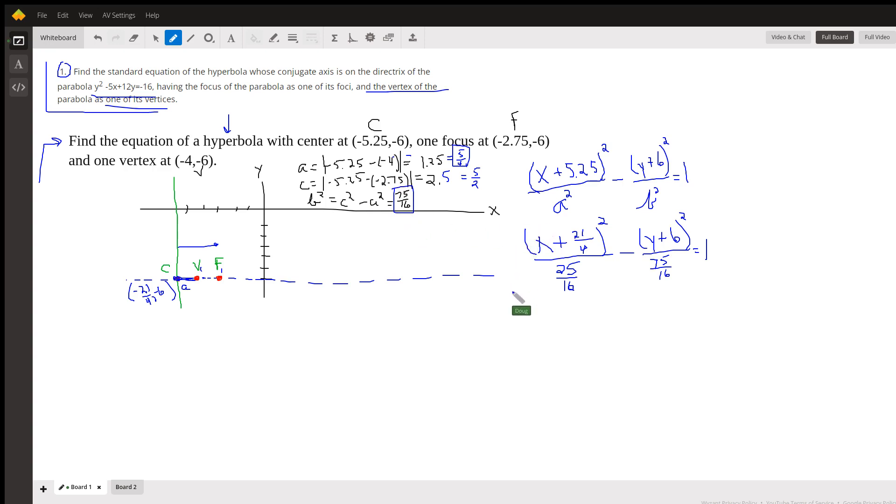And if you do that calculation and leave it as a fraction, you get 75 sixteenths. So here's your equation. There's the X minus H, where H is the X coordinate of the center, over A squared, 25 sixteenths. Minus Y plus 6, the quantity squared over 75 sixteenths equals 1.